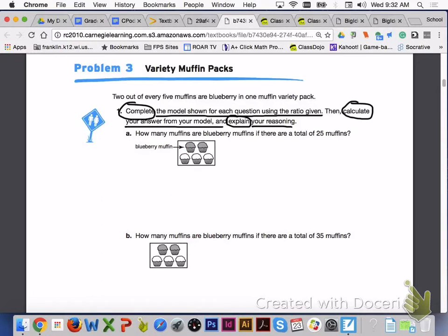Turn to page 313, Problem 3, Variety Muffin Packs. Two out of every five muffins are blueberry in one muffin variety pack. I would like you to answer number 1, letters A through C, with your group members.